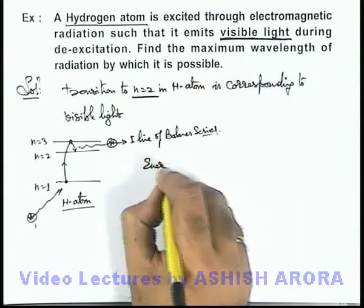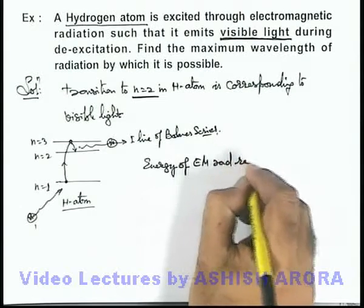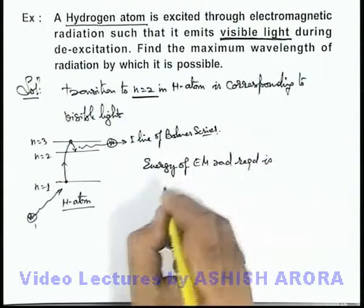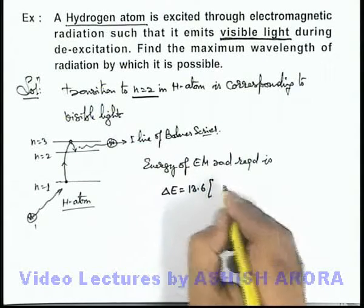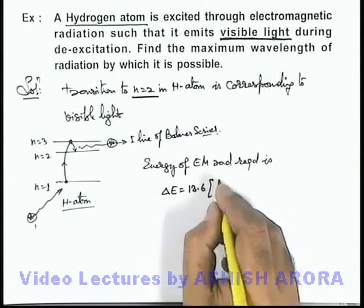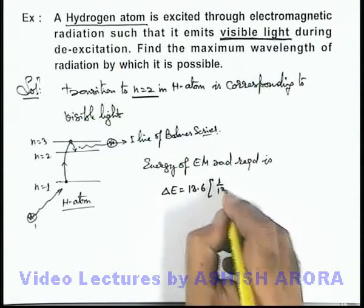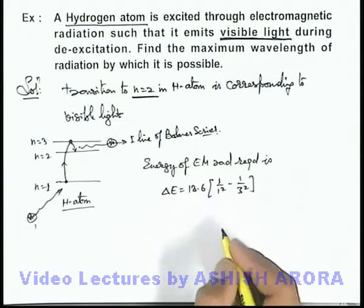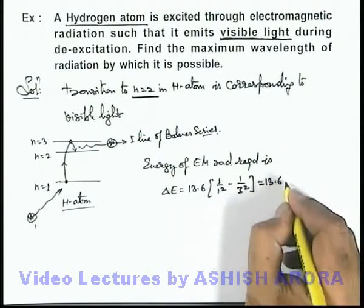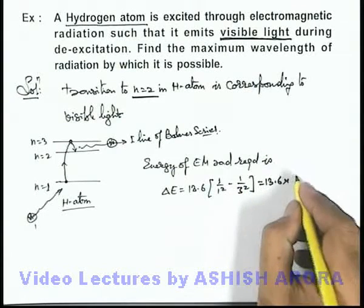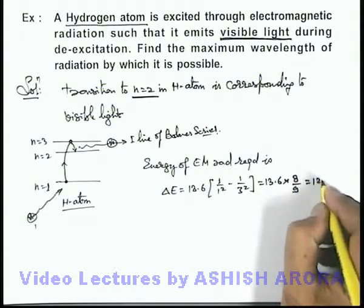Energy of electromagnetic radiation required is delta E. We can write for hydrogen as 13.6 multiplied by 1 by n1 square minus 1 by n2 square. It can be written as 1 by 1 square minus 1 by 3 square, which will be equal to 13.6 multiplied by 1 minus 1 by 9, that is 8 by 9. On simplifying we'll be getting 12.09 eV.